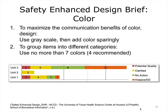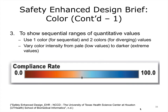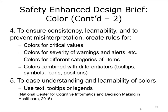To maximize the communication benefits of color design: use grayscale, then add color sparingly. To group items into different categories, use no more than seven colors — four recommended. To show sequential ranges of quantitative values, use one color for sequential and two colors for diverging values. Vary color intensity from pale for low values to darker for extreme values. To ensure consistency, learnability, and to prevent misinterpretation, create rules for colors for critical values, colors for severity of warnings and alerts, colors for different categories, and colors combined with differentiators such as tooltips, symbols, icons, and positions. To ease understanding and learnability, use text, tooltips, or a legend.